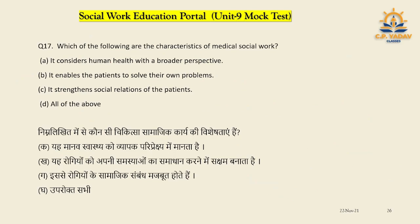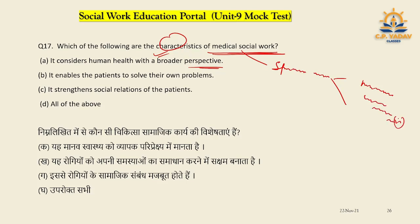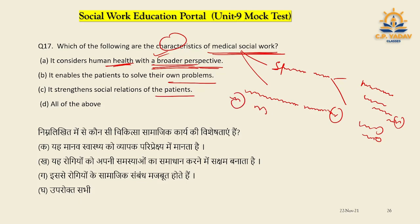Question number seventeen: Which of the following are characteristics of medical social work? It considers human health with a broader perspective, it enables the patient to solve their problems, and it extends the social relations of the patient — strengthening their environment and capabilities. All options are correct characteristics of medical social work. D is the right answer.